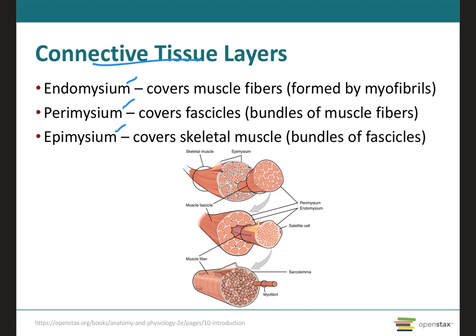I like to start with the smallest structure first. Right over here we have what we call the myofibril, which is going to be made up of several proteins that will come together to form the muscle fiber, which can also be called the muscle cell. These proteins can be, for example, actin and myosin. These proteins will form the myofibril, which will come together to form the muscle fiber. The muscle fibers will be wrapped up by this internal connective tissue layer called the endomysium — endo for inside — and this endomysium is going to be formed by collagen and reticular fibers.